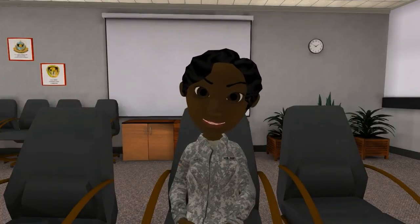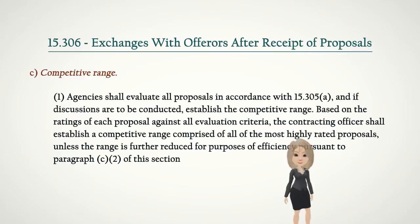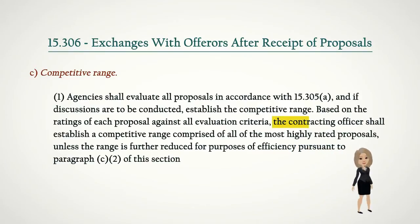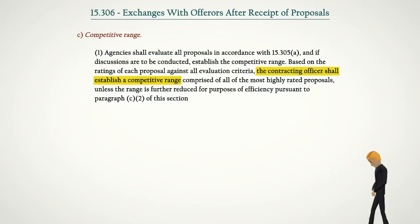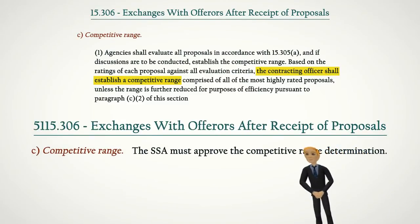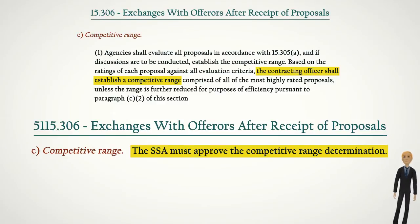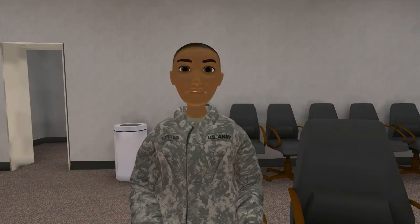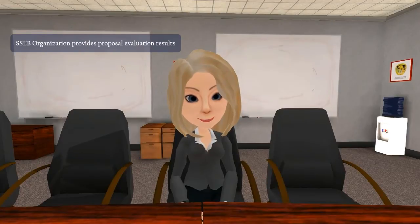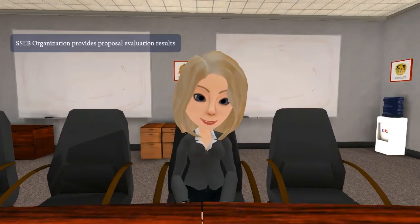Is it part of my responsibility as a source selection authority to make this determination? FAR 15.306(c) says that the contracting officer is responsible for making the competitive range determination. But the Army FAR supplement at AFARS 5115.306(c) says that the source selection authority must approve the competitive range determination. So, as SSA, you need to fully understand what a competitive range determination is all about. You and the SSEB organization that you are in charge of are responsible for providing the information upon which the competitive range determination is based — in other words, the proposal evaluation results.